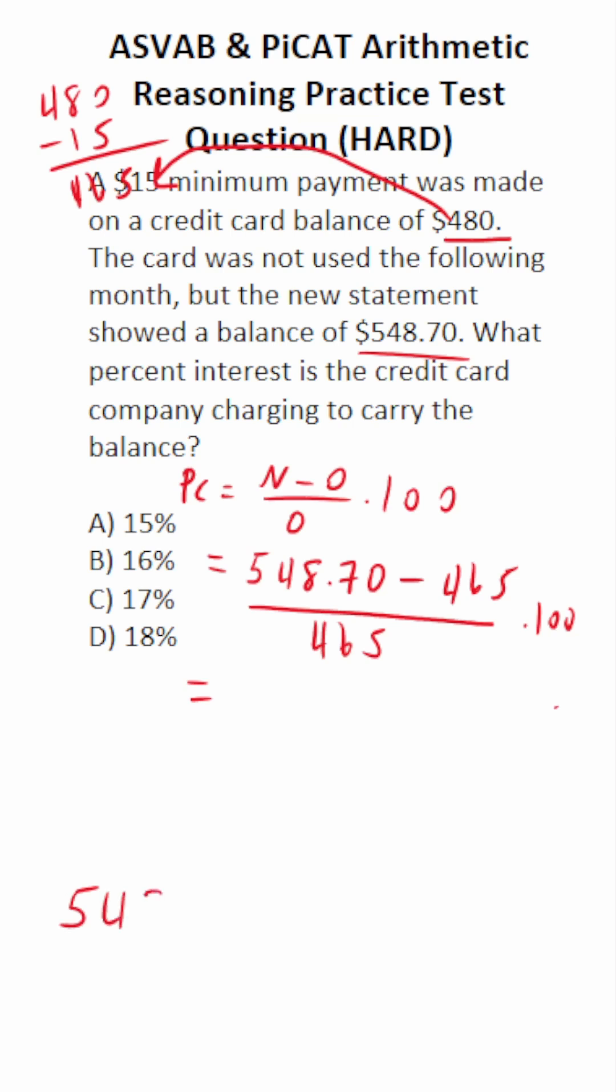I'm going to do 548.70 minus 465. 70 minus nothing is 70. Bring down our decimal. 8 minus 5 is 3. 4 minus 6 we can't do, we have to borrow. This becomes 4, this becomes 14. 14 minus 6 is 8. 4 minus 4 is nothing. So this is 83.70 divided by 465.